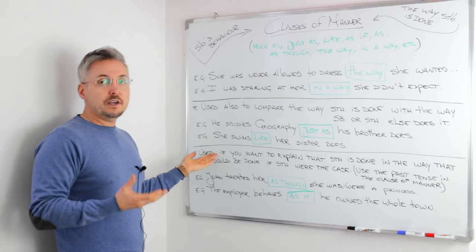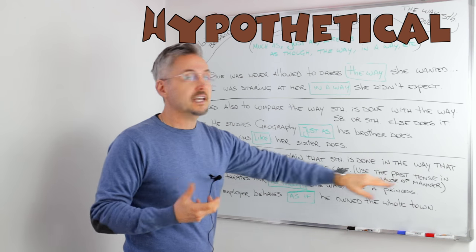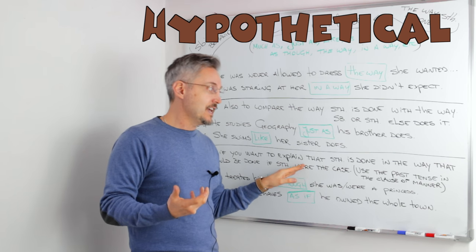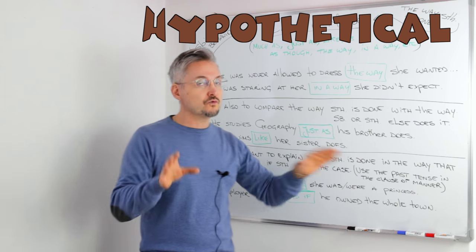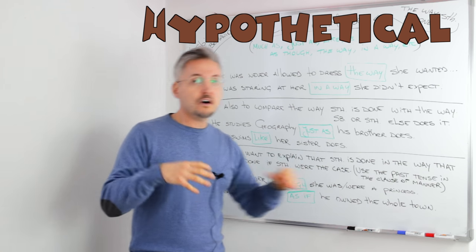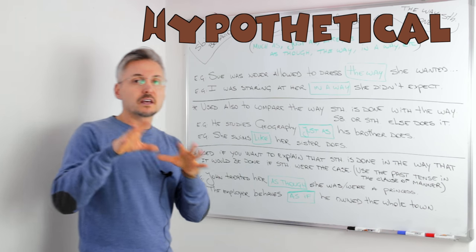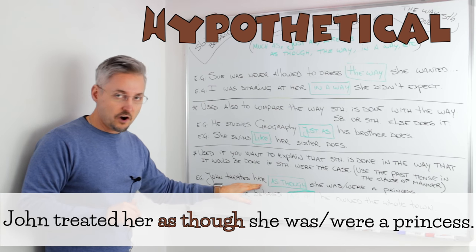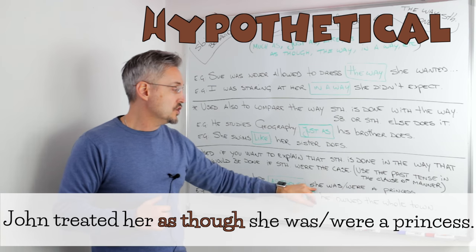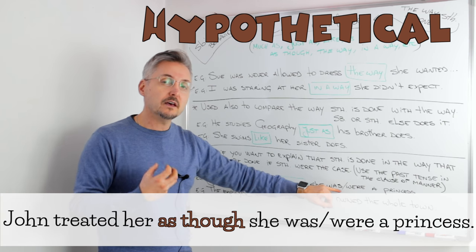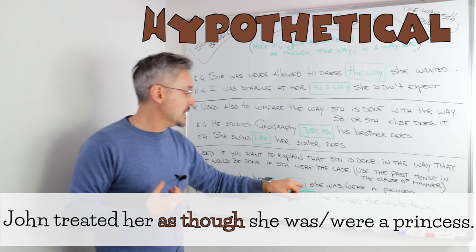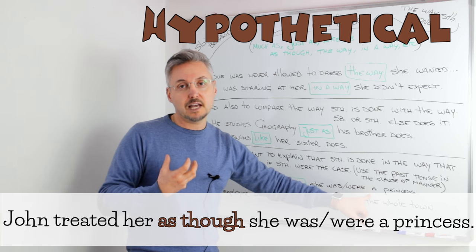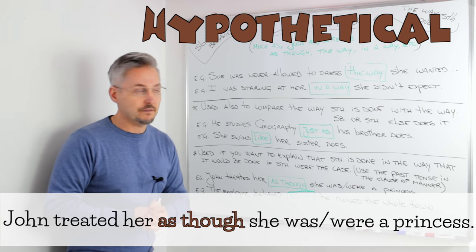Now, it is used also if you want to explain that something is done in the way that it would be done if something were the case. And, in this case, we need to remember to use the past tense in the clause of manner. Let me give you the example again. John treated her as though she was or were, the subjunctive part of the sentence. Because right after the clause of manner, we need the past tense. In this case, it would be a subjunctive.